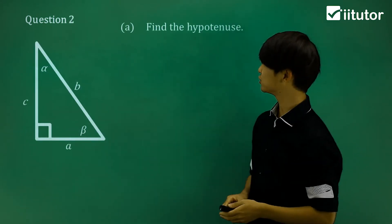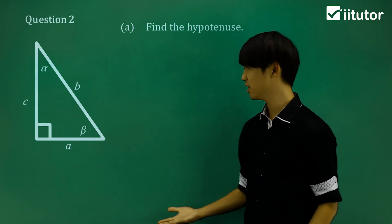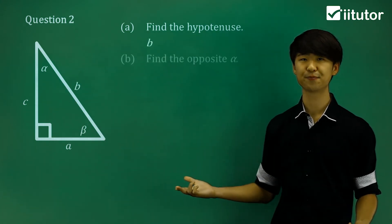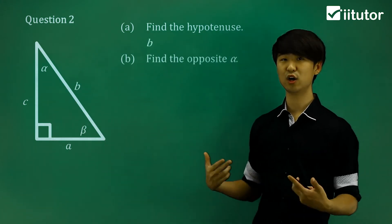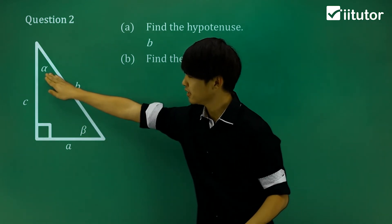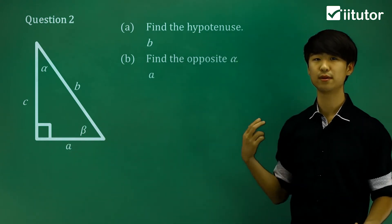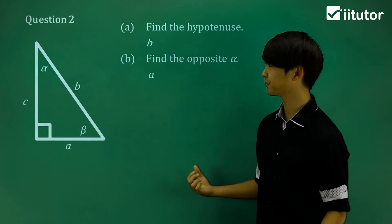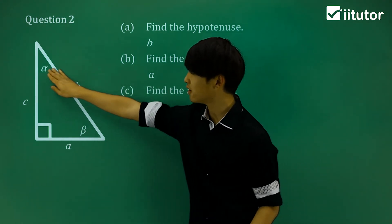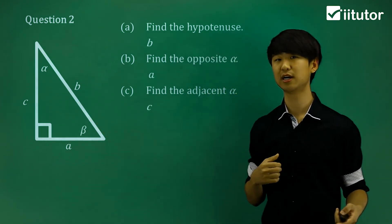Let's look at question two. In part A, find the hypotenuse — that's the longest side of the right-angled triangle, which is side B. In part B, find the side opposite to alpha. There's alpha, so the opposite side is side A. In part C, find the adjacent of alpha — the side right next to it is going to be side C.